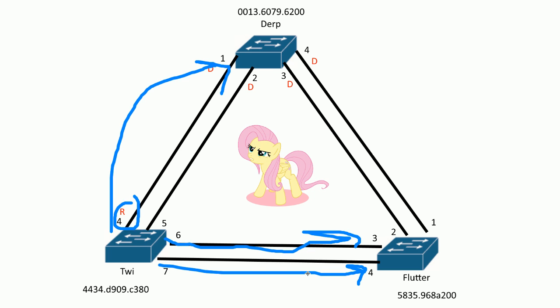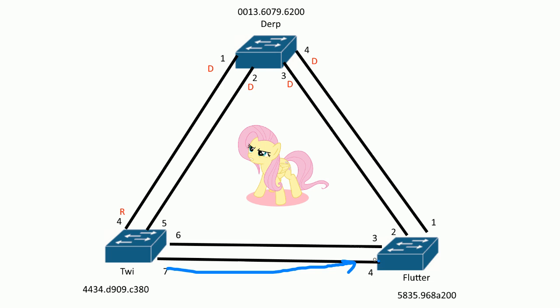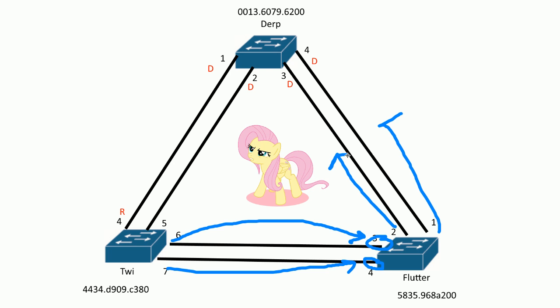It sends out a BPDU frame saying the cost is 19. And what flutter does when it receives that on ports three and four is add a cost of 19. This port is fast ethernet negotiated — that's its speed. You have to be careful: just because it's gigabit doesn't mean it's a cost of four. Whatever the port is running at — whatever speed it's negotiated — it will reflect the cost. So flutter will go out its other ports advertising a cost of 38, because it had originally 19 through twine and it added another 19 through these ports.